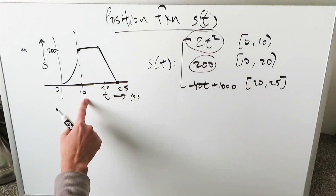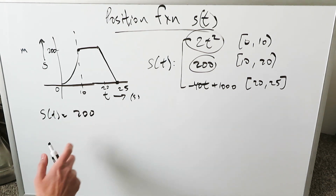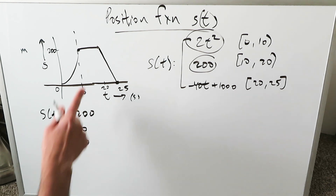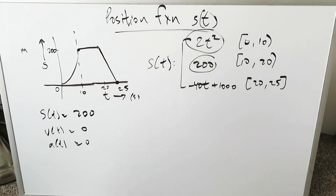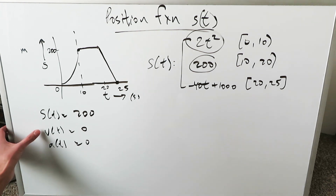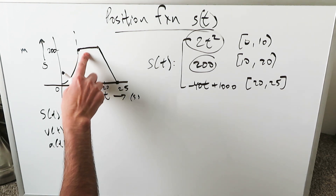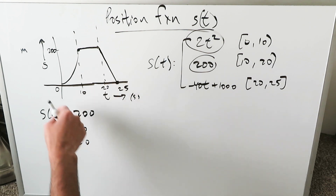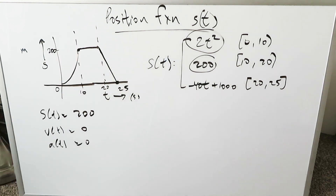Now look at the interval from 10 to 20 seconds. The position function is the constant 200. You do the derivative and you get 0; do it again and you get 0 again. A horizontal line indicates a slope of 0 — any tangent line drawn at any point in this interval will also have a slope of 0. There is absolutely no change in position, therefore no change in velocity, and if velocity is not changing, there is no acceleration. From 10 to 20 seconds, your object is at rest — but it's at rest 200 meters away from its original resting position — and it stayed there for those 10 seconds.